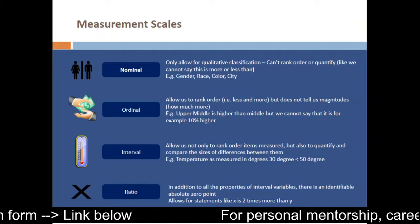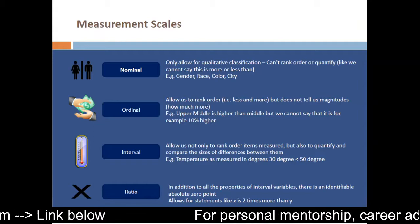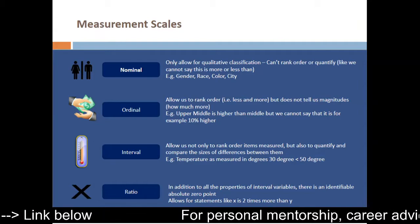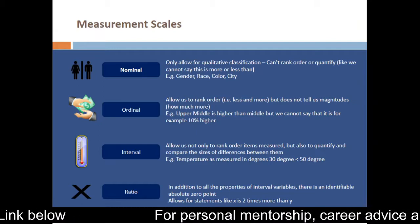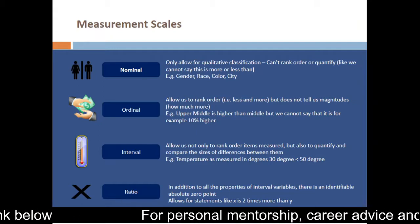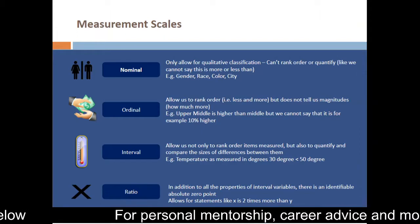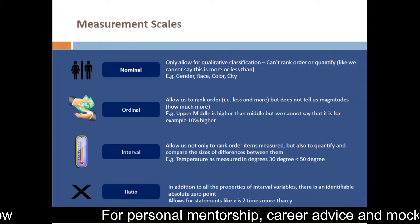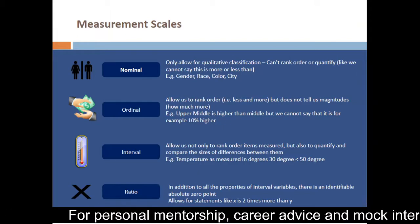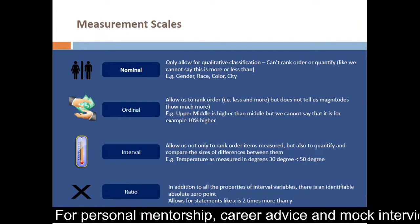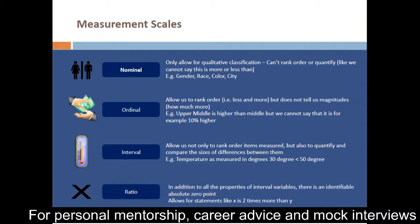One other measurement scale is the interval scale, which not only allows us to rank order items that we are trying to measure, but it also allows us to quantify and compare the differences among the two or multiple variables that we are looking at. An example would be temperature. If we are measuring temperature in degrees or Fahrenheit, we could easily compare the two numbers. For example, we can say 30 degrees is less than 50 degrees in terms of temperature.